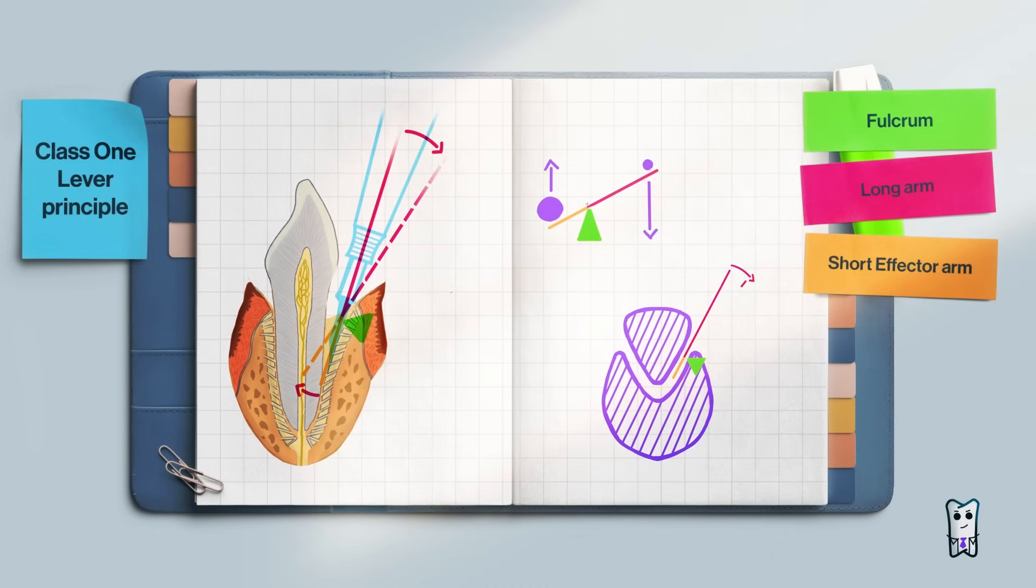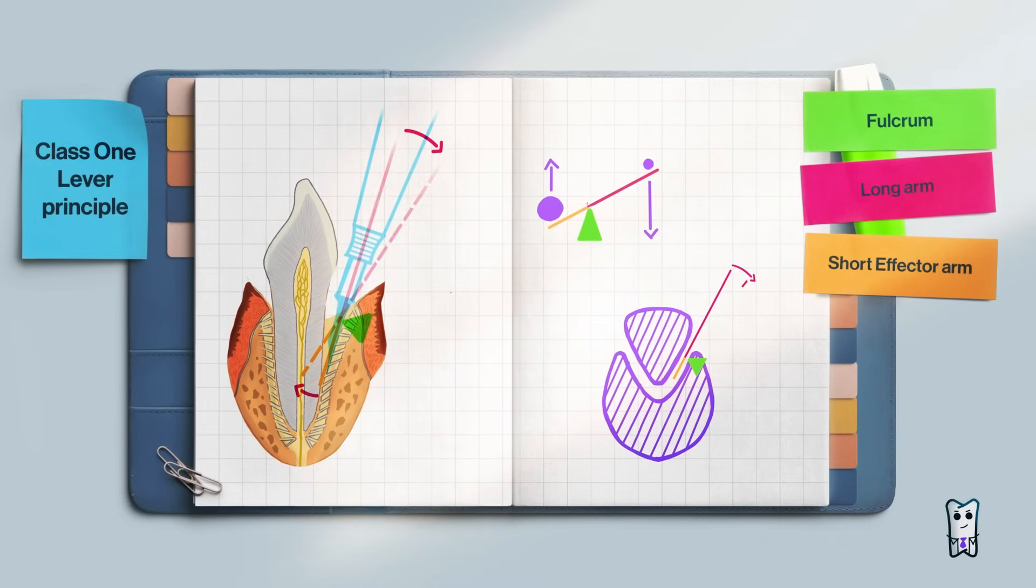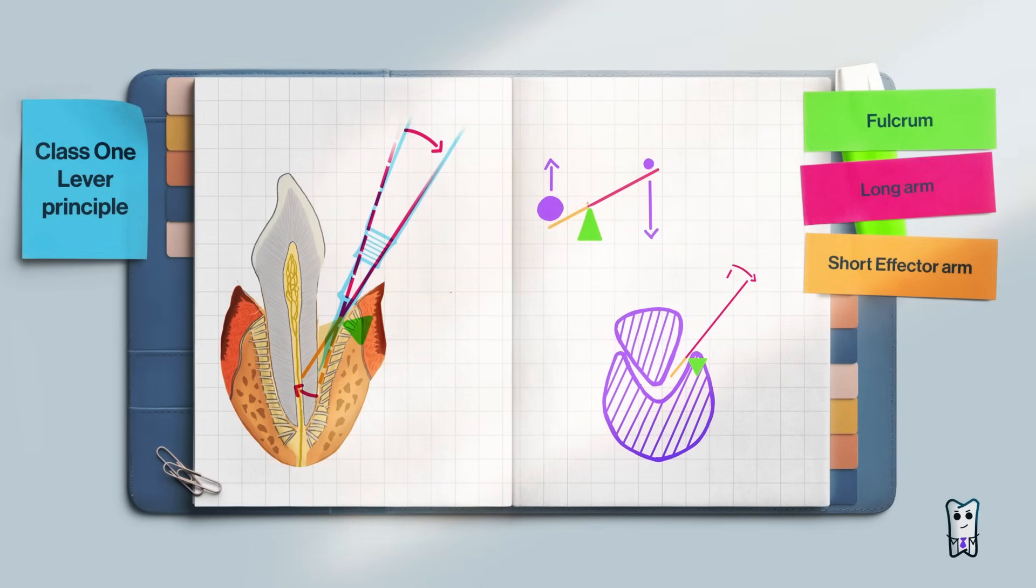We can apply this principle to the extraction of teeth. The fulcrum is the bone, the short arm is the part of the elevator in the periodontium, and the long arm is made of the shank and the handle. By moving the handle with the tip of the elevator, we can luxate the tooth.